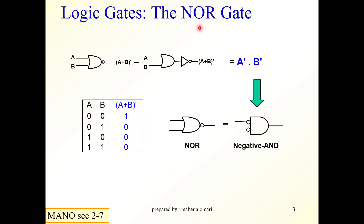Another gate is the NOR gate. The NOR gate is the complement of the OR — it is an OR gate followed by an inverter. This bubble resembles an inverter, and this is another symbol, the main symbol, for the NOR gate.